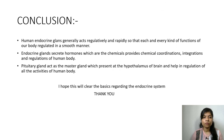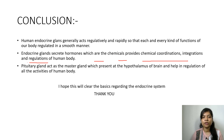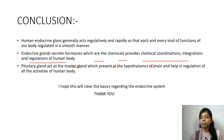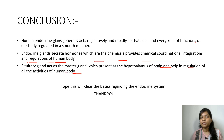In summary, the human endocrine glands act regulatively and rapidly so that every function of our body is regulated smoothly. They secrete hormones — chemicals that help in the chemical coordination, integration, and regulation of every human activity. The pituitary, the master gland present in the hypothalamus of the brain, helps regulate all human activities.